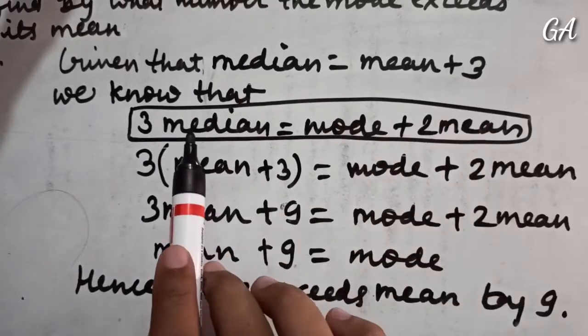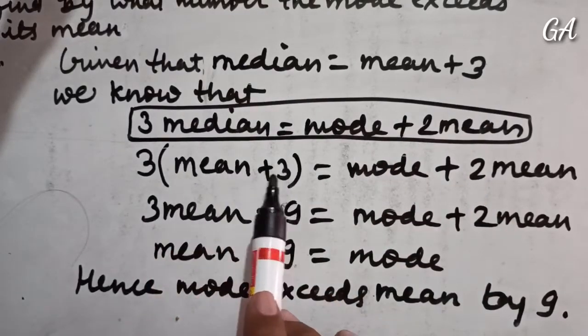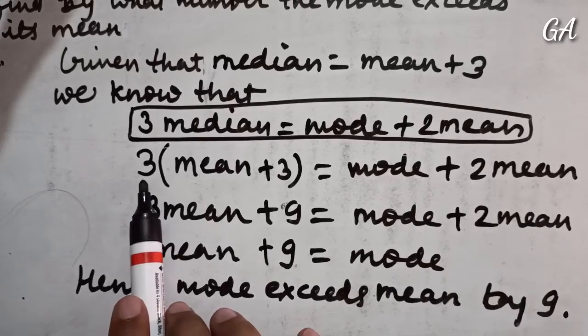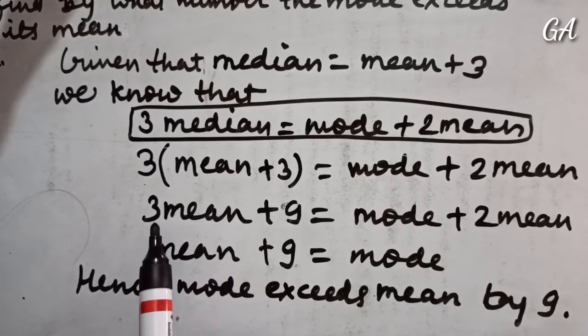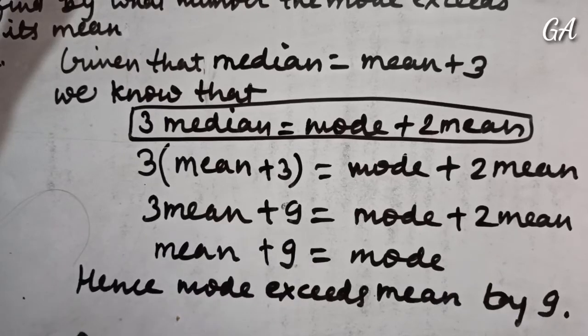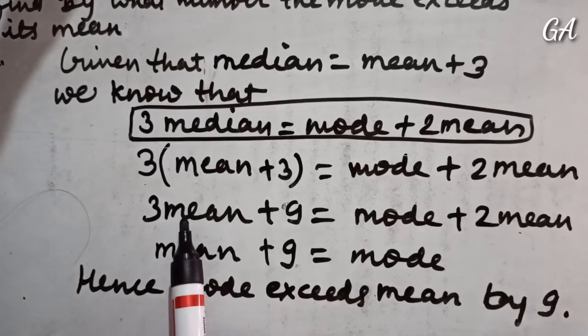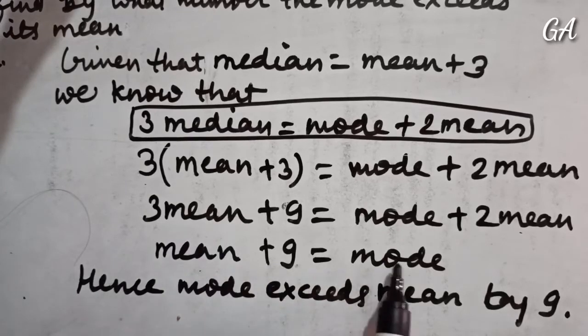Median is equal to mean plus 3. If median equals mean plus 3, we substitute: 3(mean + 3) = mode + 2 mean. This gives us 3 mean + 9 = mode + 2 mean. So mean plus 9 equals mode.